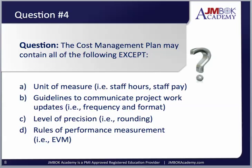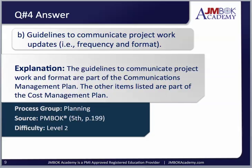Question number four. The cost management plan may contain all of the following except: A. Unit of measure — such as staff hours, staff pay. B. Guidelines to communicate project work, updates, frequency, and format. C. Level of precision — like rounding. Or D. Rules of performance measurement, like earned value management. The answer is B — guidelines to communicate project work, updates, frequency, and format.